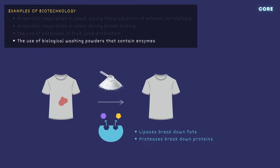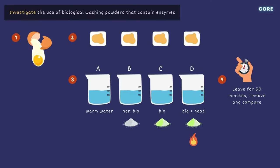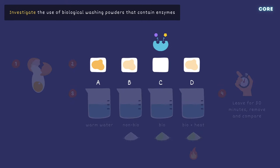You need to be able to investigate the use of biological washing powders that contain enzymes. Break and whisk an egg, and spread the egg evenly onto four equally sized pieces of white cloth. Prepare four beakers: one with only warm water (the control), one with non-biological washing powder, one with biological washing powder, and one with biological washing powder that's been boiled and left to cool. Place a piece of cloth in each beaker, and after 30 minutes, remove and compare. Cloth C is the cleanest, because enzymes in the biological washing powder break down the proteins and fats in the egg stain into small soluble molecules that can dissolve in the water and escape from the cloth.